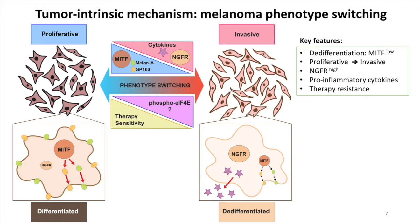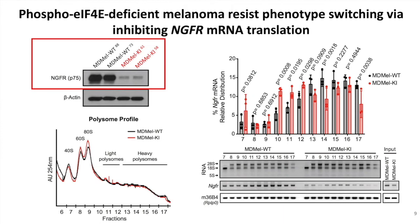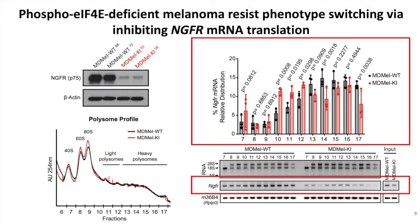Basically, melanoma cells can switch from a more differentiated and more proliferative state to a more de-differentiated and more invasive state, with many other features. To demonstrate this, we generated wild-type versus knock-in tumor-derived cell lines. We see a very clear switch of phenotype: the knock-in tumor cell lines are more proliferative and less invasive compared to the wild-type cell lines. One important regulator of phenotype switching is a protein called NGFR. We indeed saw a huge decrease of NGFR protein level in the knock-in tumor-derived cell lines. Because EIF4E phosphorylation regulates mRNA translation, we then did polysome profiling and showed that the NGFR mRNA is shifted to less-efficiently translated polysome fractions in the knock-in cells where EIF4E cannot be phosphorylated. This data suggests that NGFR is under translational regulation of EIF4E phosphorylation.